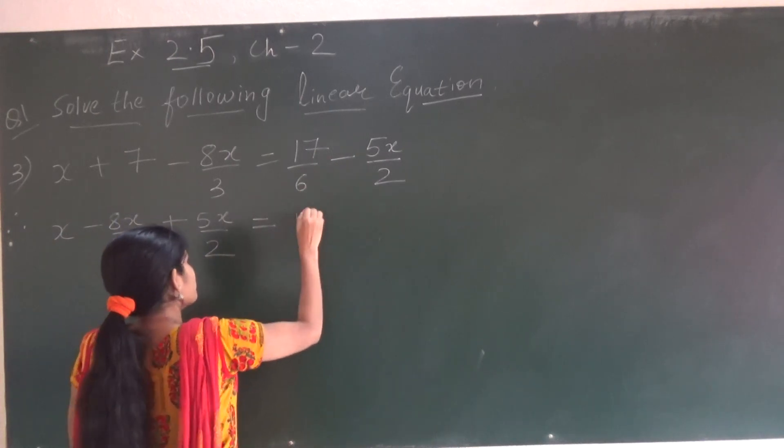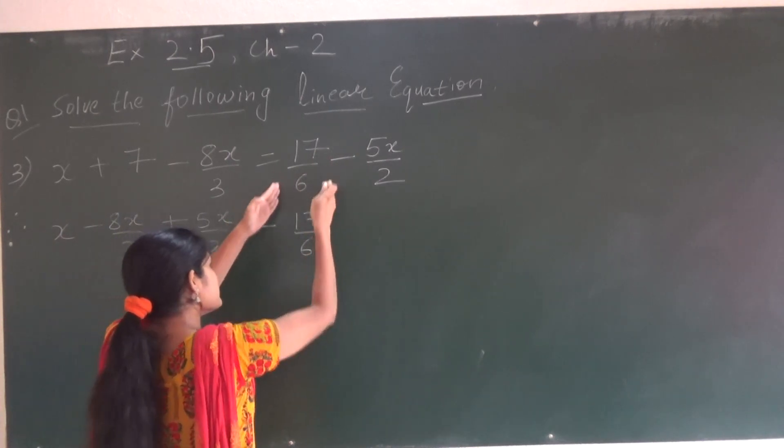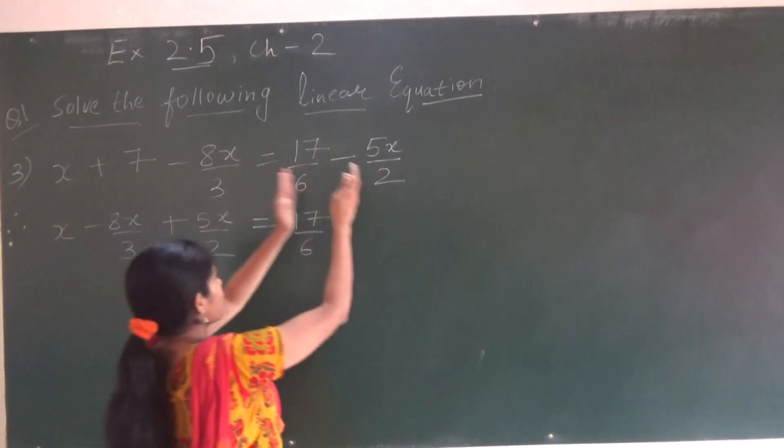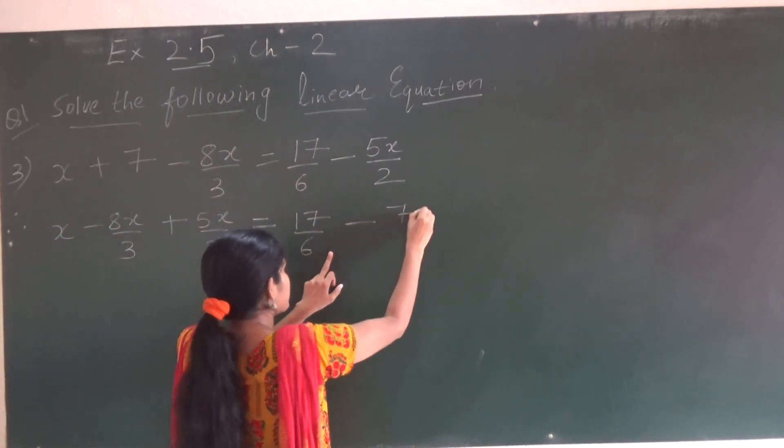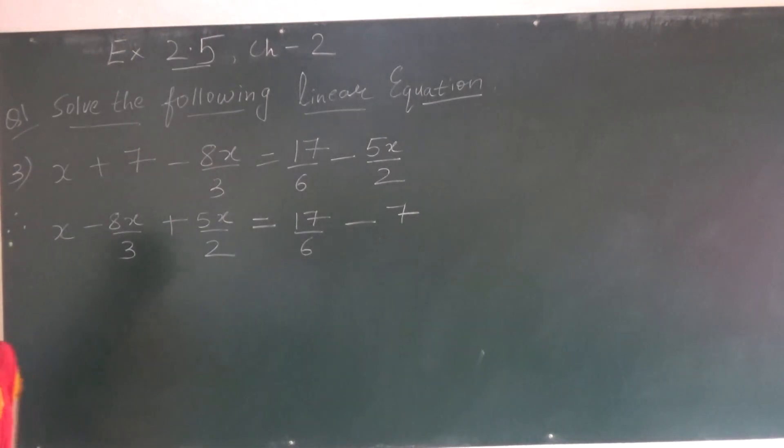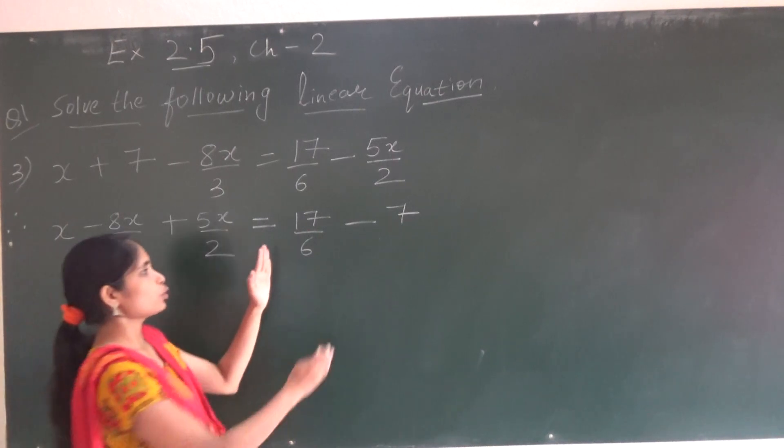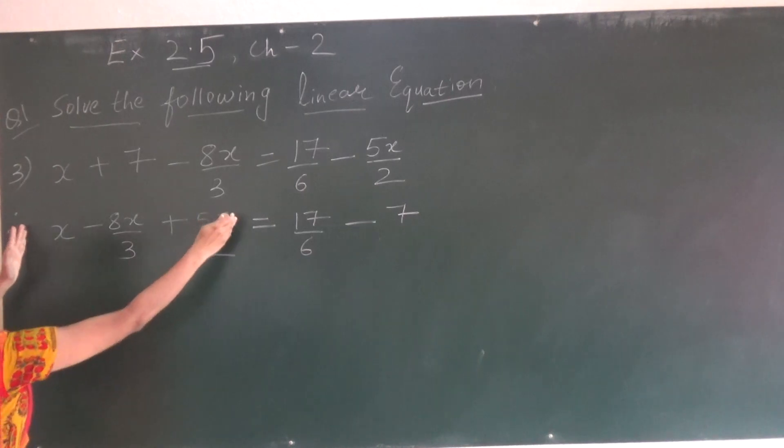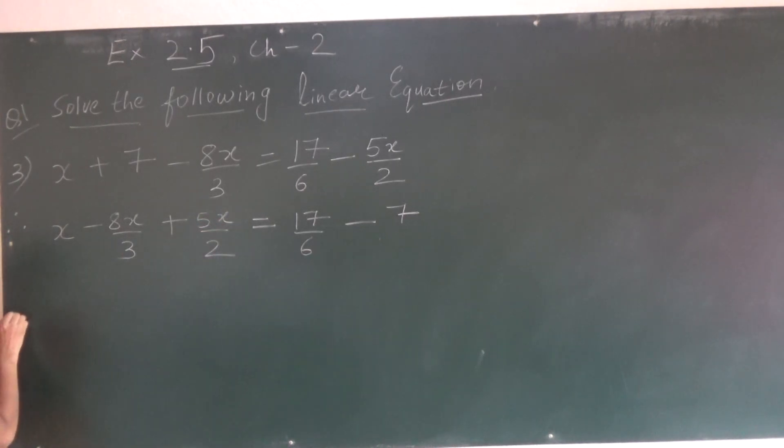So here it was 17 upon 6 as it is. And this plus 7 we are keeping here, so it will be minus 7. Now these 3 are like terms and these both are numbers. So we can solve these both and we can solve these 3 terms. So let us start.